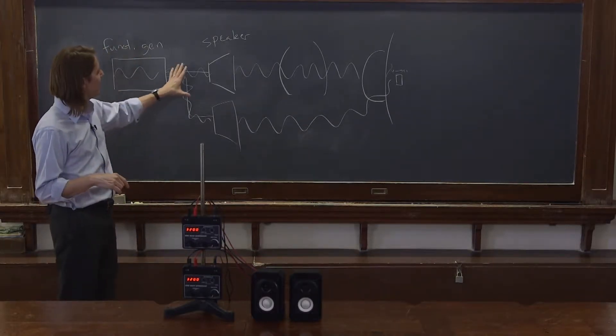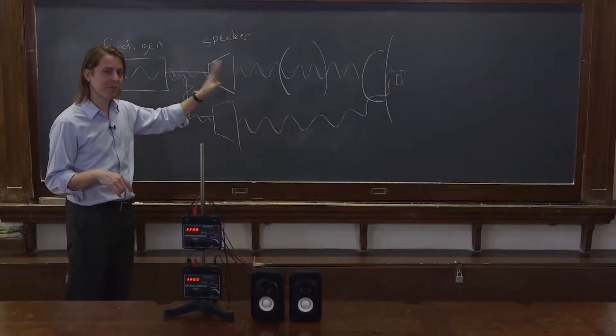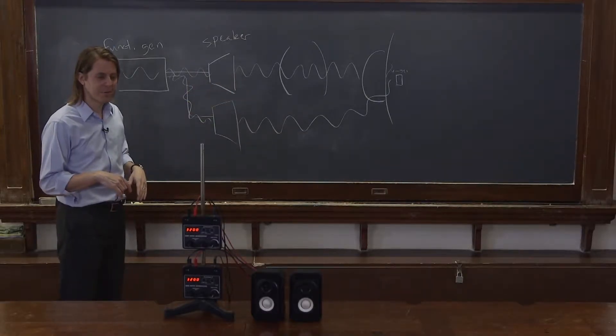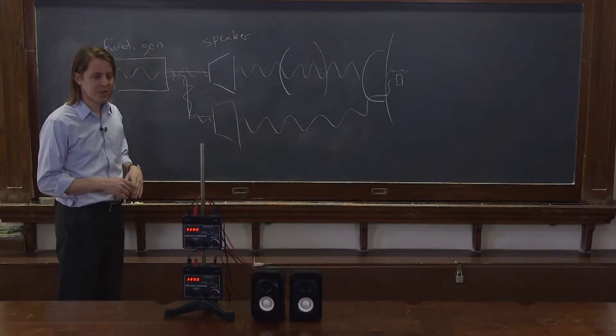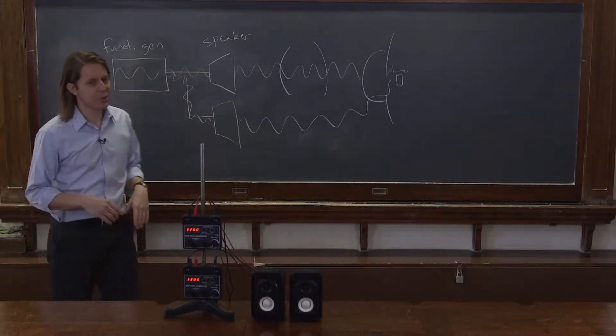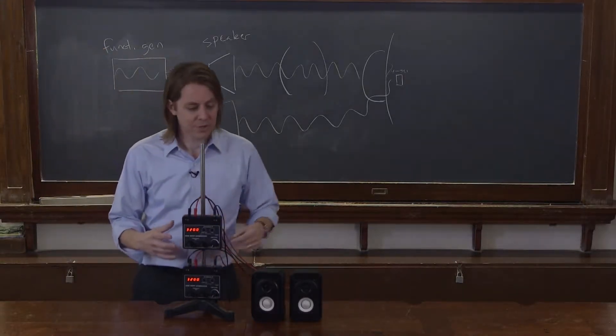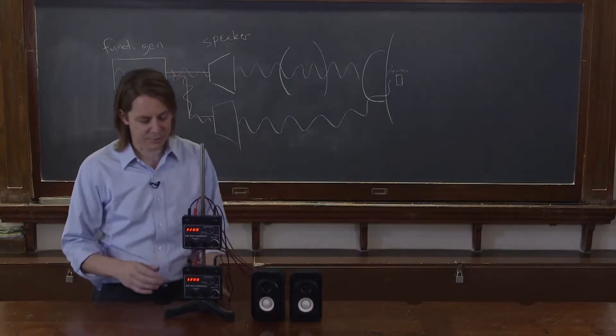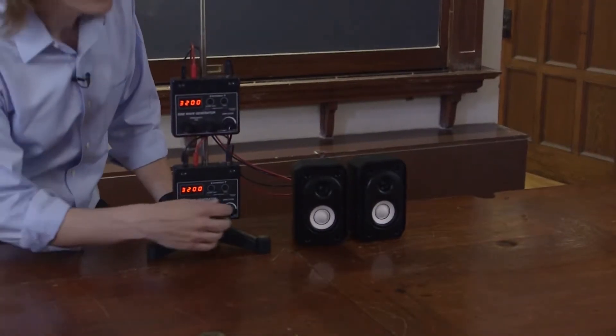We have a function generator driving a couple of speakers. The speakers make sound waves that oscillate your tympanic membrane, which you hear as sound. Now we're going to have the speakers going at slightly different frequencies. So now each one has its own function generator. They're both set at 320 hertz.